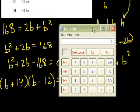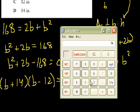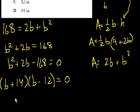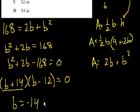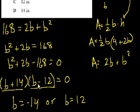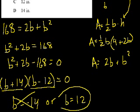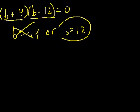Let me just confirm, 14 times 12, yeah 168. So b could equal minus 14, or b could equal 12. If you make one of these terms 0, you're making the whole thing 0. The base, since we're dealing with distances or lengths, we can't have a negative length. So the base has to be 12 inches, which is choice C. Next question.